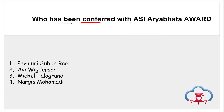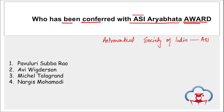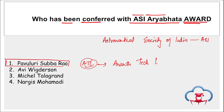Who has been conferred with the ASI Arya Bhatta Award? ASI stands for Astronautical Society of India. The award was conferred upon Pavuluri Subba Rao — a former ISRO scientist and founder and CEO of ATL (Anant Technologies Limited). He received this honor for his outstanding lifetime contribution to the promotion of astronautics in India.